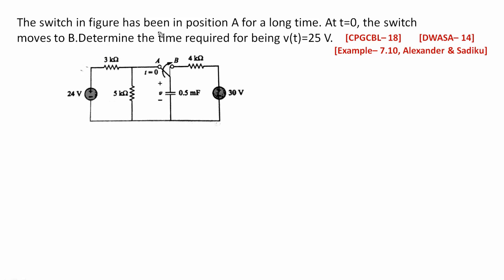The switch in the figure has been in position A for a long time. When the switch is in position A, the path is closed and current flows. Then at T equals 0, the switch moves to position B. When the switch moves to B, the current flow changes accordingly. We will determine the time required for Vt to equal 25.